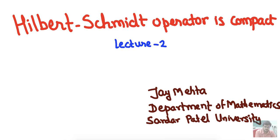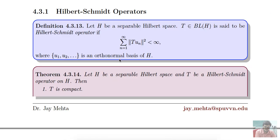Welcome students to the second lecture on Hilbert-Schmidt operators. Today we are going to see that a Hilbert-Schmidt operator is compact. Last time we saw the definition of Hilbert-Schmidt operator and some examples. Let us recall the definition: if H is a separable Hilbert space with a countable orthonormal basis u₁, u₂, ... and T belongs to B(H), T is said to be Hilbert-Schmidt if the sum Σ‖Tuₙ‖² is finite, i.e., this series is convergent.